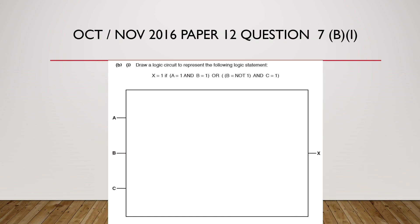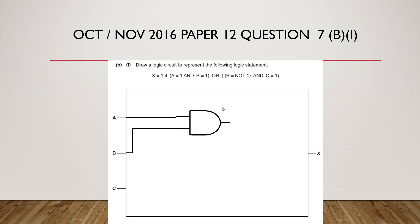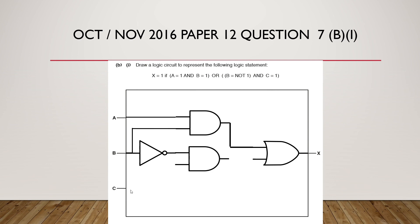Next example: October/November 2016, Paper 1.2, Question 7b first part. Again we have a logic statement with binary values given for the inputs. A=1 and B=1, so both go as straight lines to an AND gate. The output goes to an OR gate. The second input of this OR gate is NOT B AND C: a NOT gate on input B, going into an AND gate, with a straight line from C as the second input of that AND gate. The output of that AND gate connects to the OR gate.